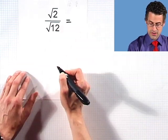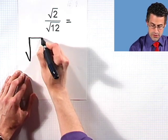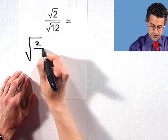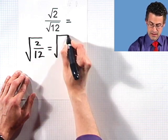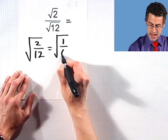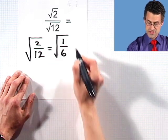Well, the first thing I would do is write this as square root of the whole thing, 2 over 12. Then I can actually simplify a little bit and write that fraction as square root of 1 over 6.